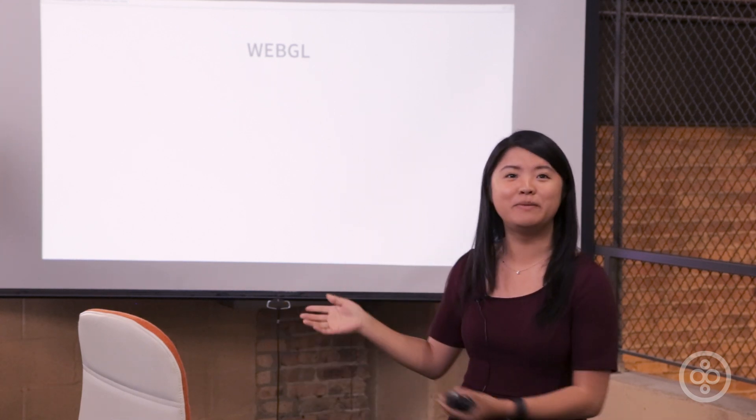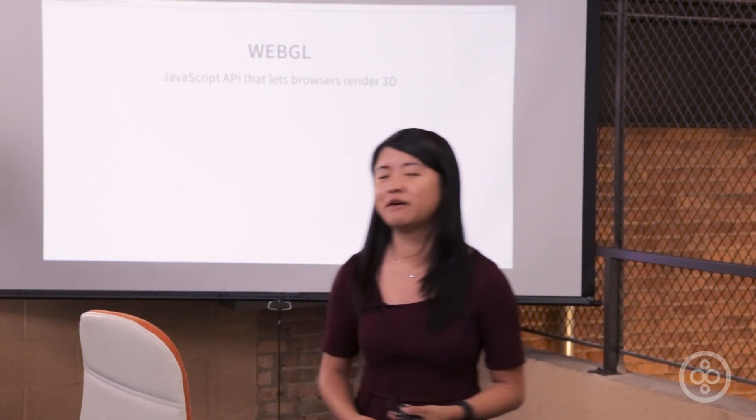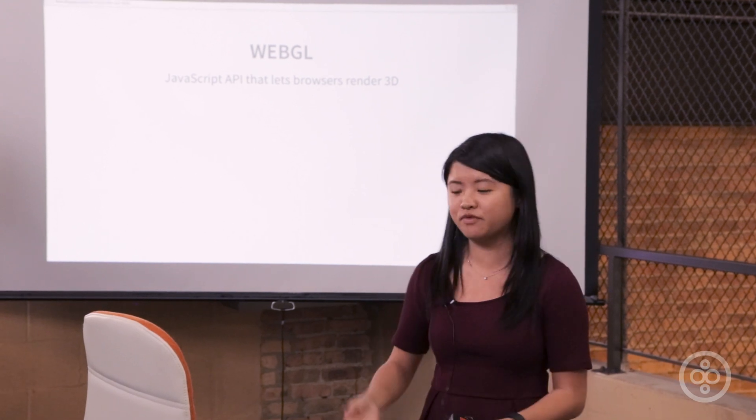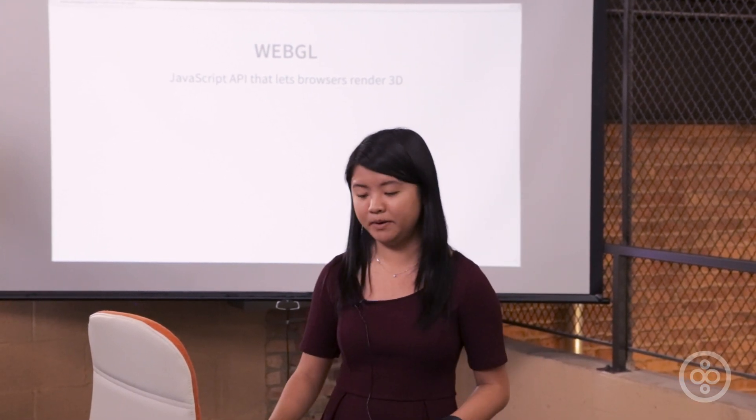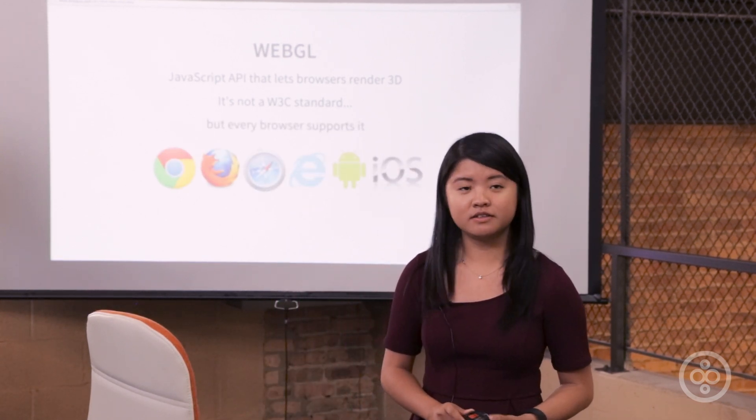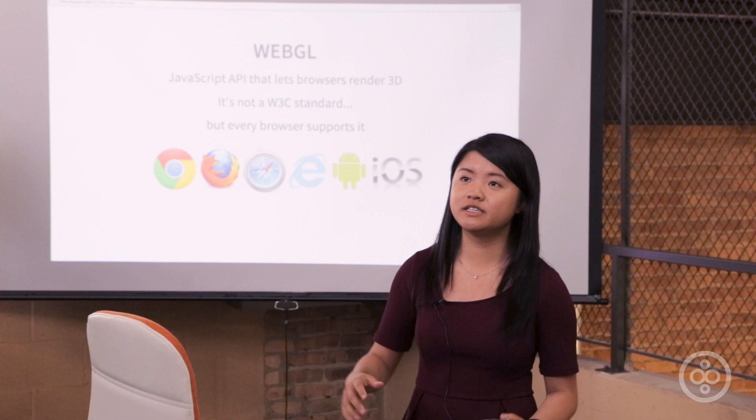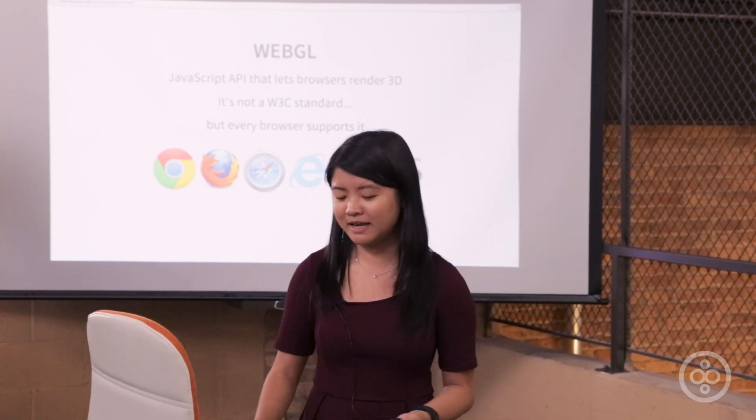So WebGL is derived from OpenGL. It stands for Web Graphical Library. It's a JavaScript API that lets browsers render 3D. So it basically pulls from your graphics engine from your computer. It's not a W3C standard yet, but right now every browser supports it. If you're not in the space, it's really been catching up lately. IE just started to pick up the support sometime last year. And it's a difficult technology to master. It's new. It's like OpenGL. So basically, what you're doing software-wise is drawing 3D objects and meshes using code, basically like mathematical formulas.